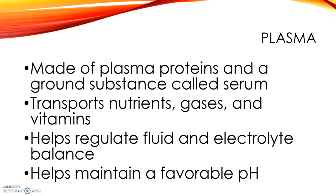Let's focus in on the plasma — 55% of the blood. It is the liquid portion of blood and it's made up of plasma proteins and a ground substance called serum. The plasma proteins are albumins, globulins, and fibrinogens. It also has different plasma nutrients — carbs, lipids, amino acids — and plasma electrolytes including vitamins, minerals, and electrolytes. It's about 92% water. Its main function is to transport nutrients, gas, and vitamins, help regulate fluid and electrolyte balance, and help maintain pH.